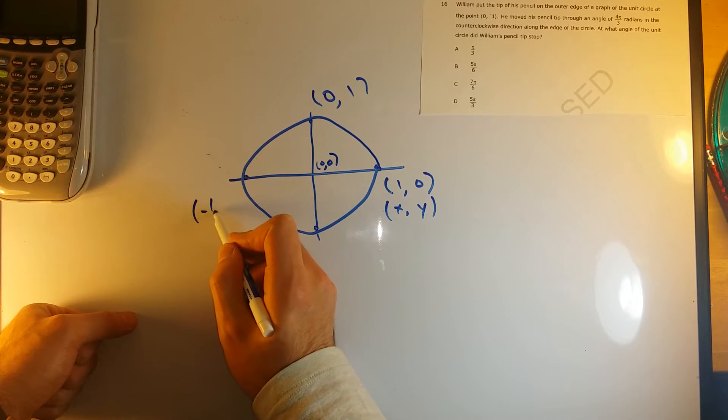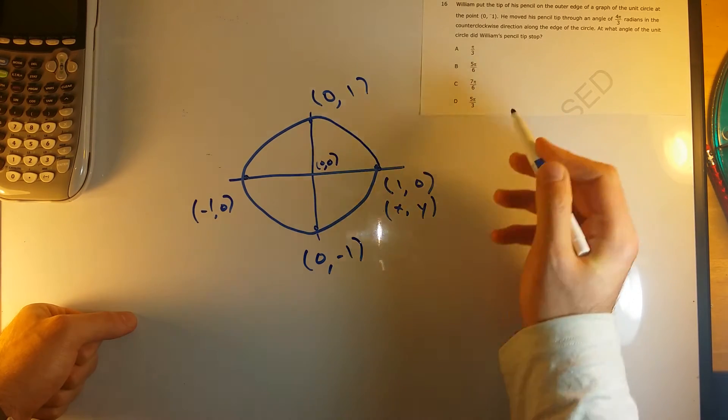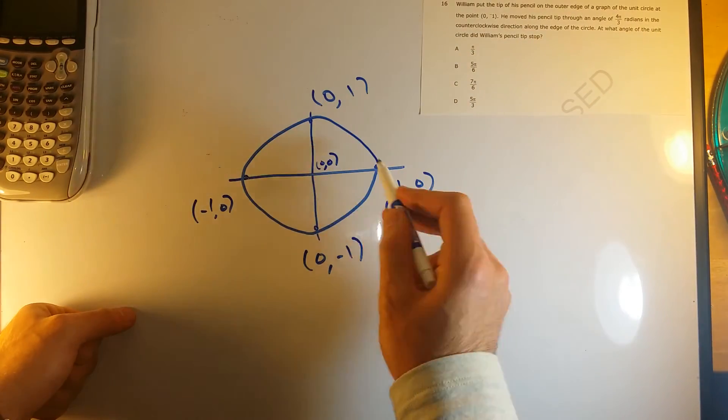This point would be at (-1, 0). This point would be at (0, -1). Okay, so these are our points.